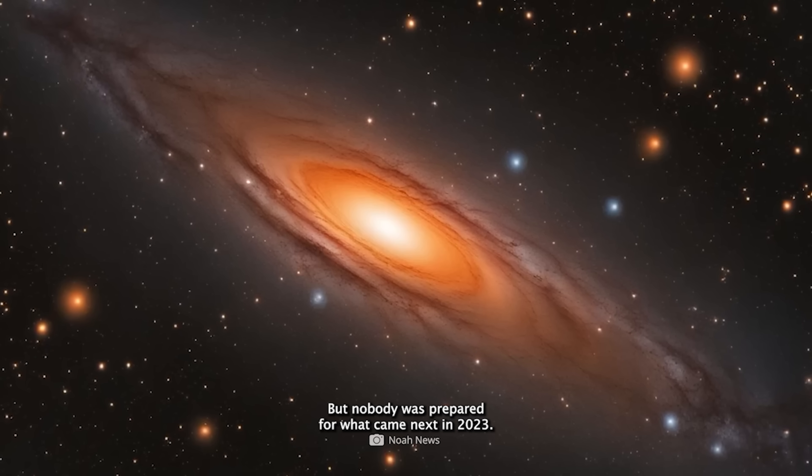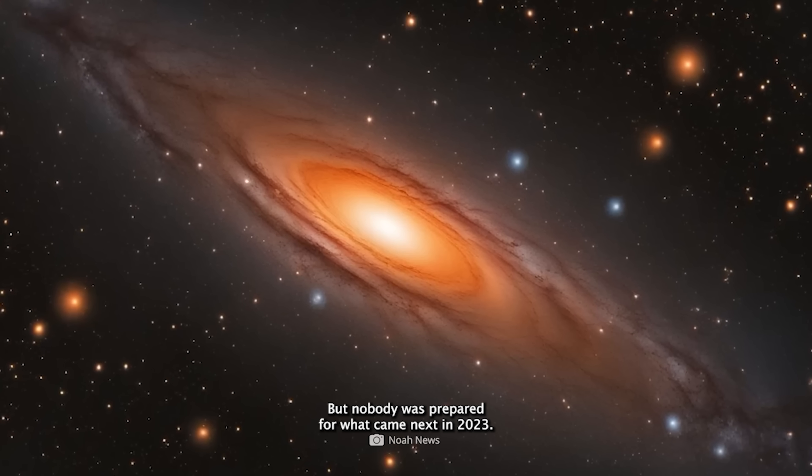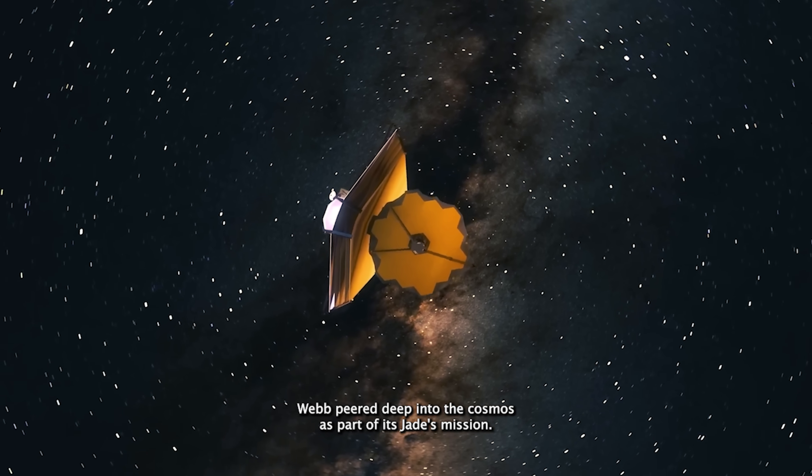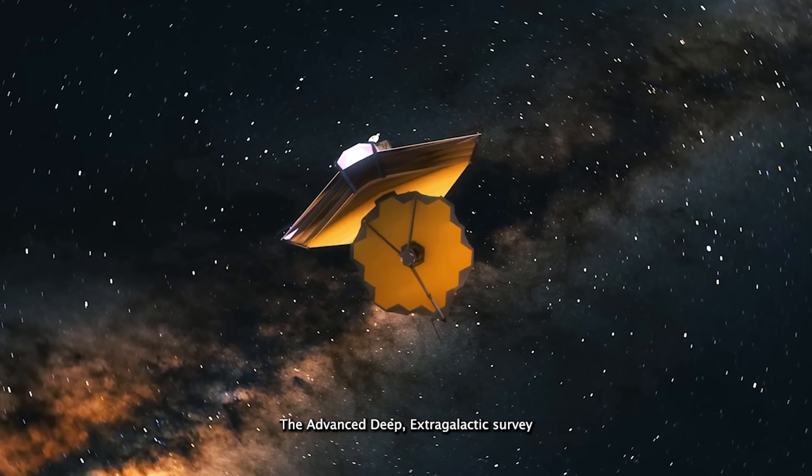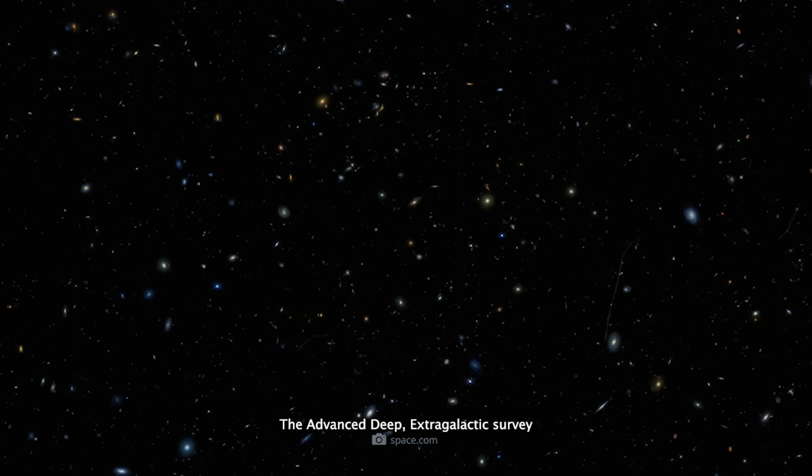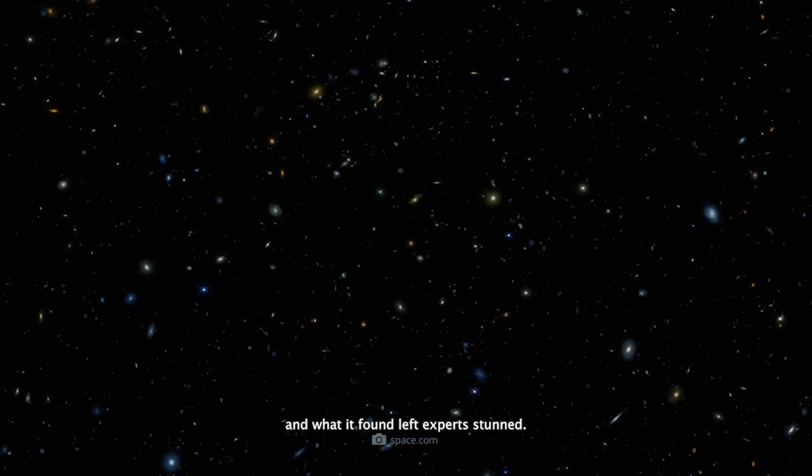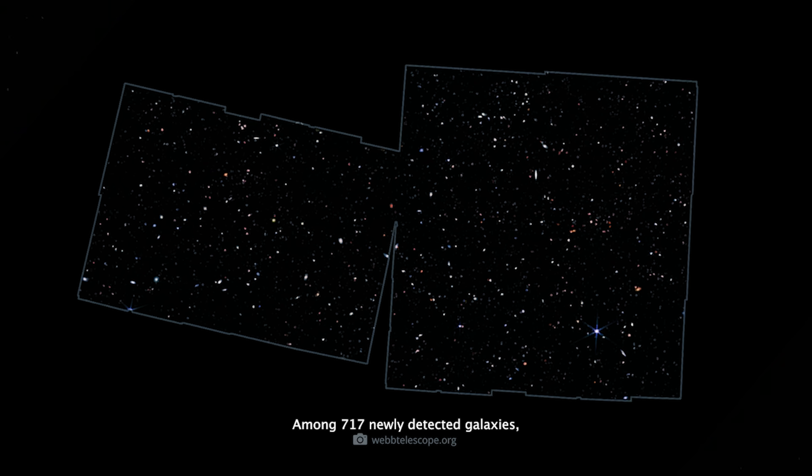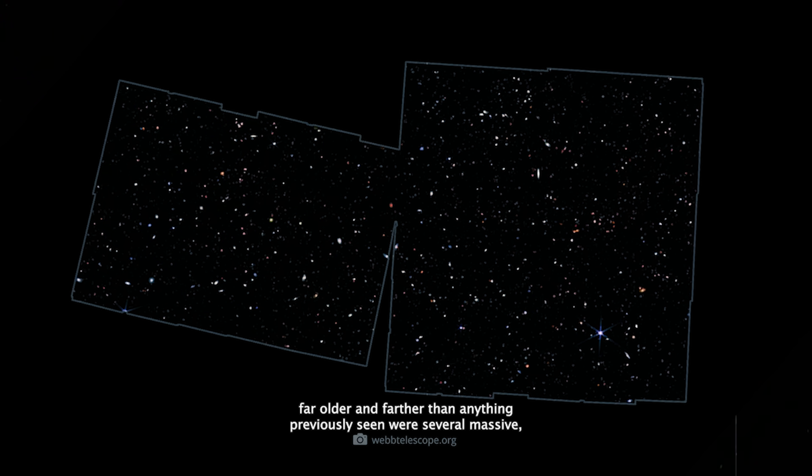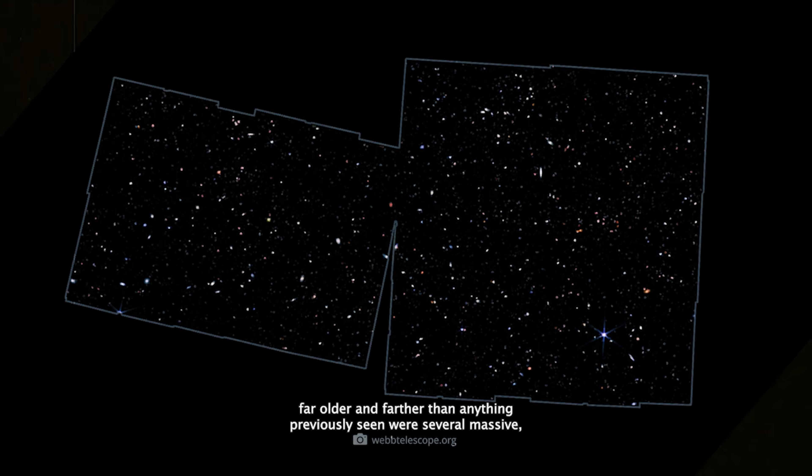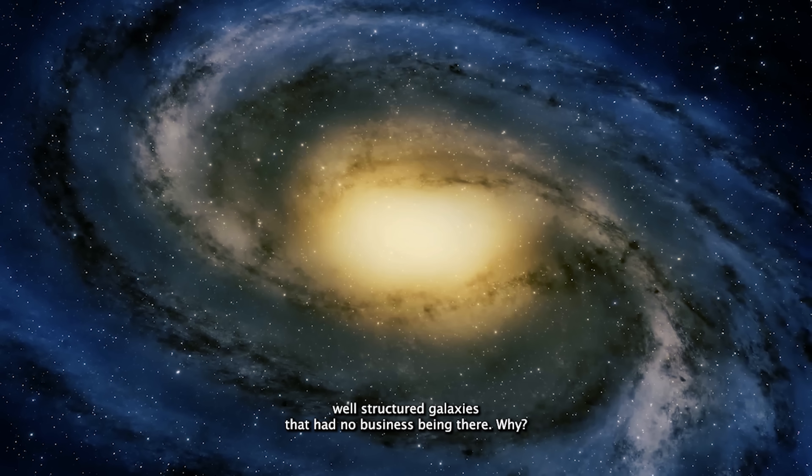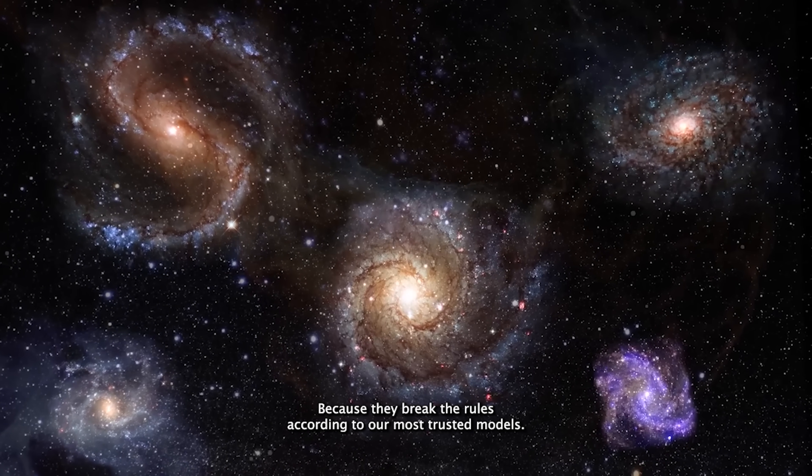But nobody was prepared for what came next. In 2023, Webb peered deep into the cosmos as part of its JADES mission—the Advanced Deep Extragalactic Survey. And what it found left experts stunned. Among 717 newly detected galaxies, far older and farther than anything previously seen, were several massive, well-structured galaxies that had no business being there. Why? Because they break the rules.